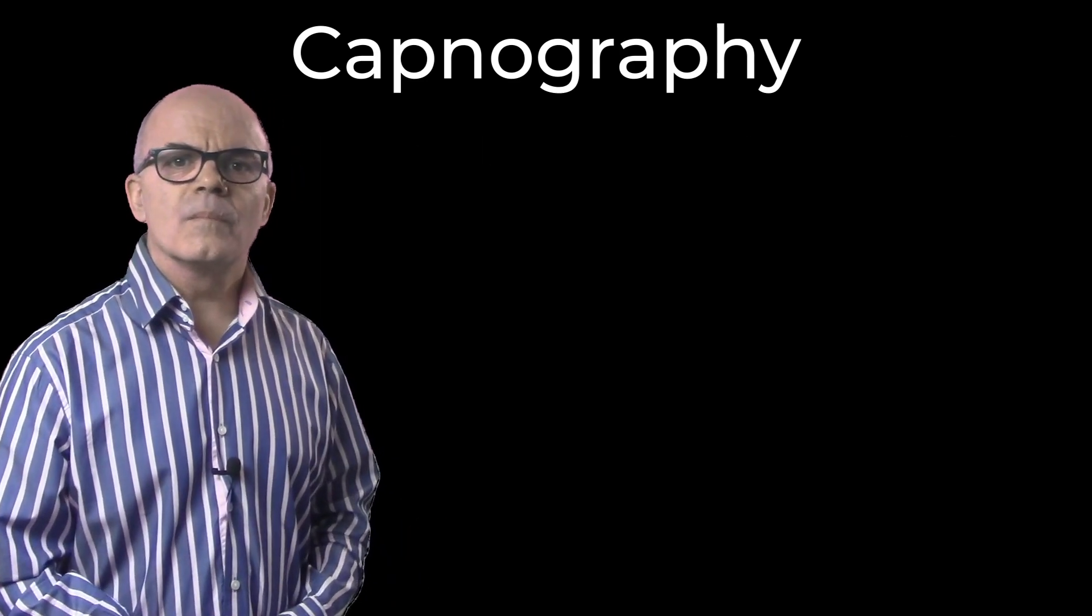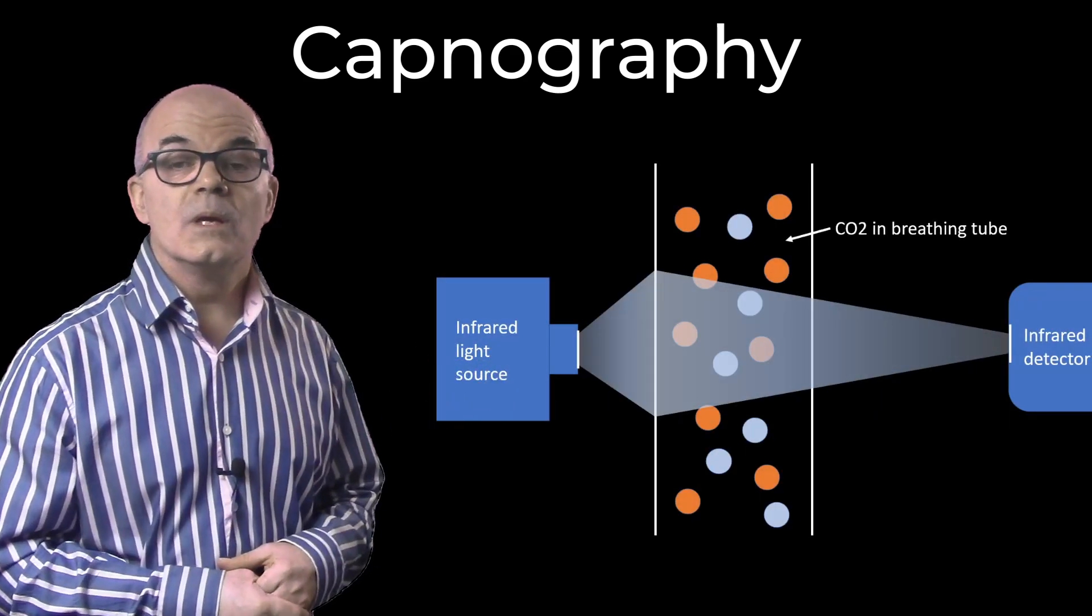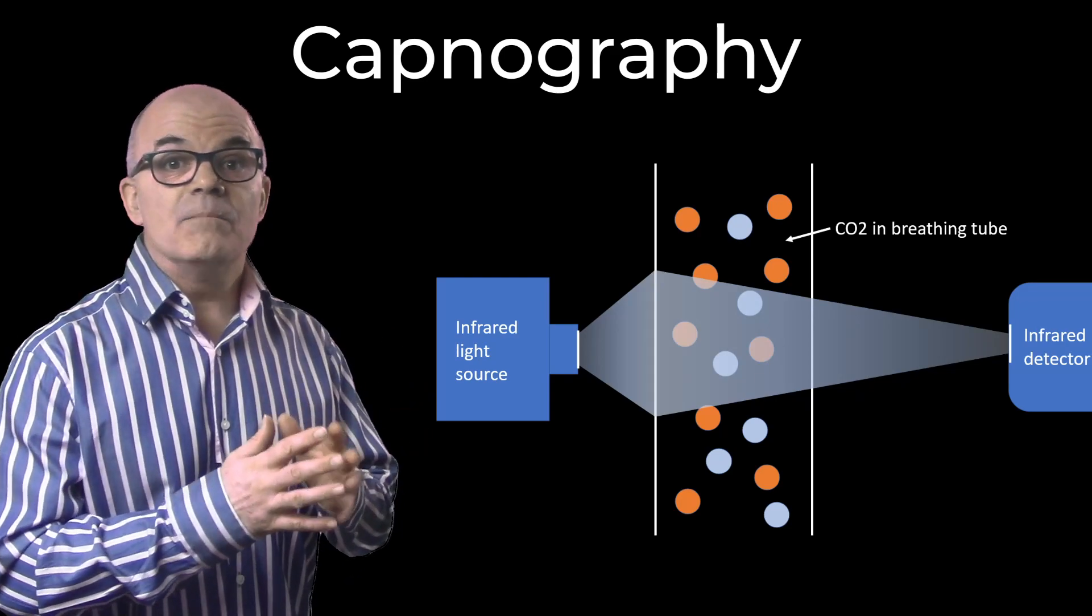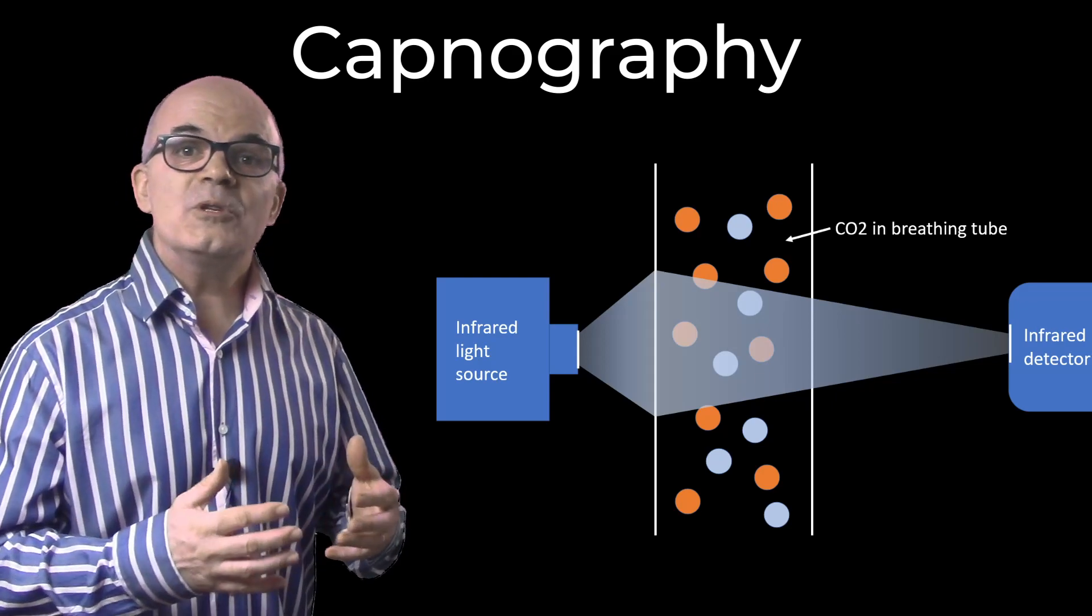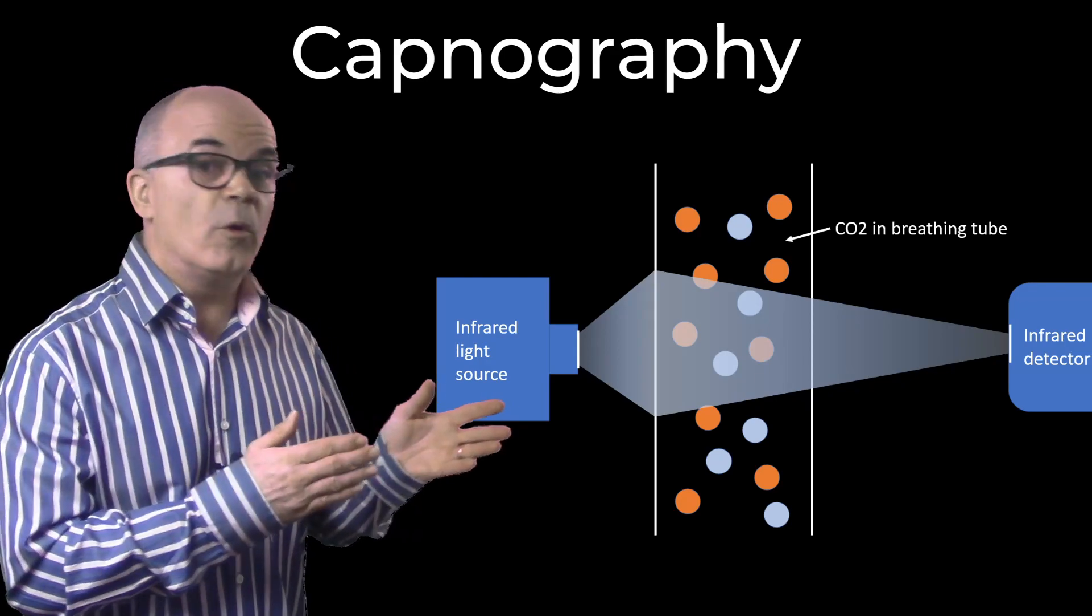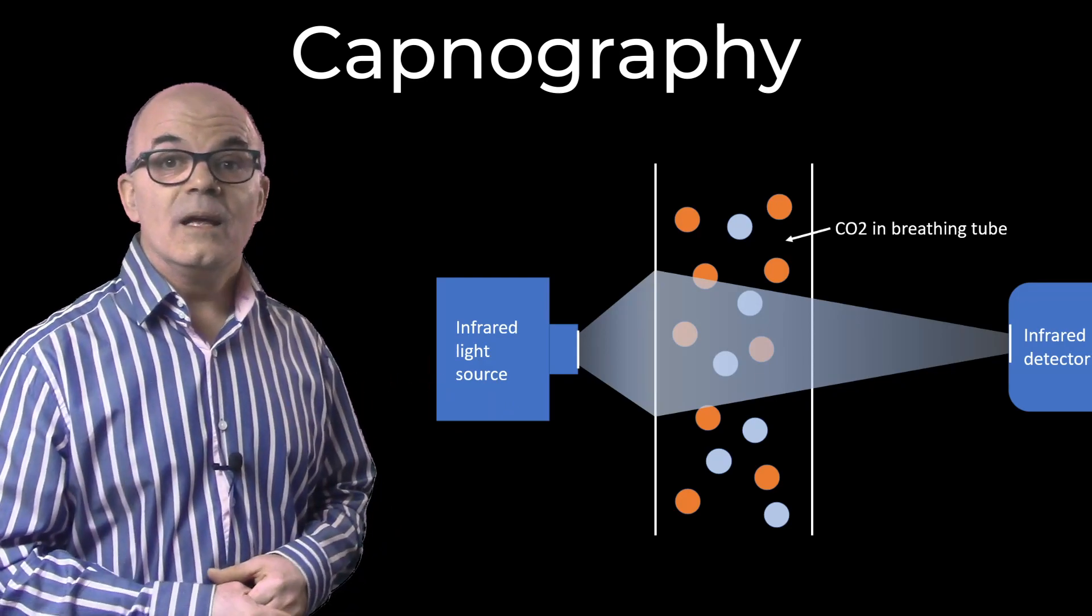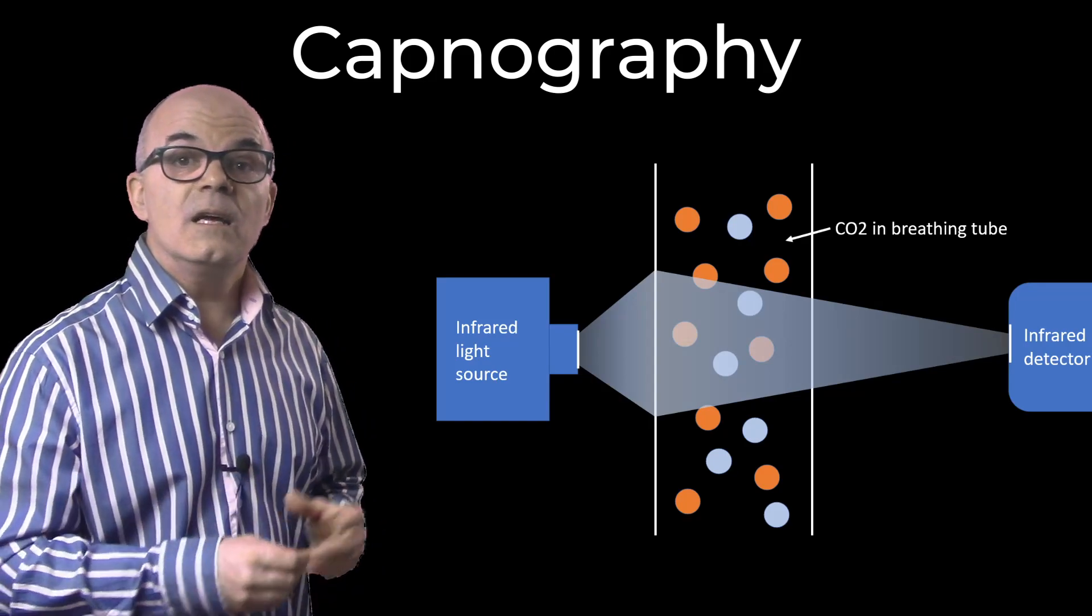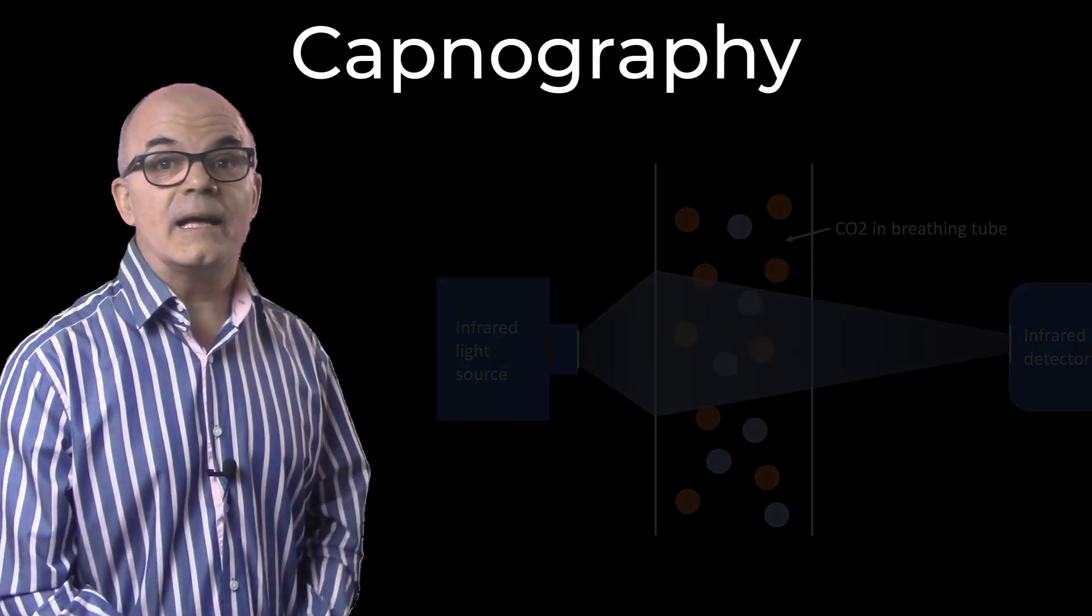How does it work? Infrared absorption spectroscopy. Two sides to the device: an infrared light emitter and an infrared light detector. As CO2 passes the emitter, light of a certain wavelength is absorbed by the CO2. The detector then senses this drop in the infrared light and translates this into a number or a graphical display.